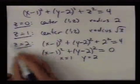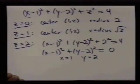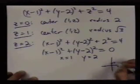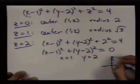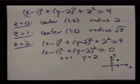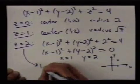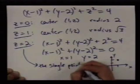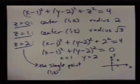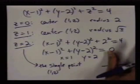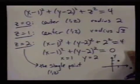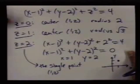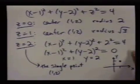So slicing the surface at the value of z equals 2, we just get a single point. So z equals 2 gives us the single point 1, 2. So I've set z equal to 0, 1, and 2, and in the first two cases, we get circles. And in the third case, we just get this single point.